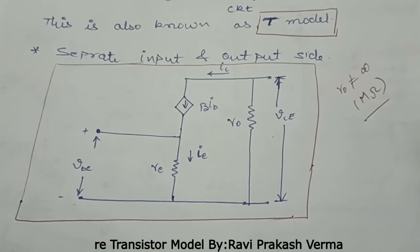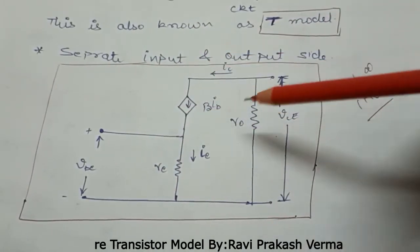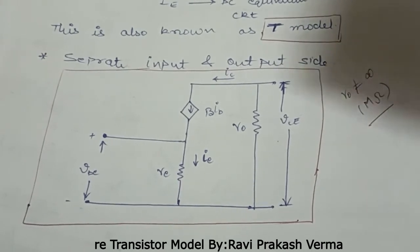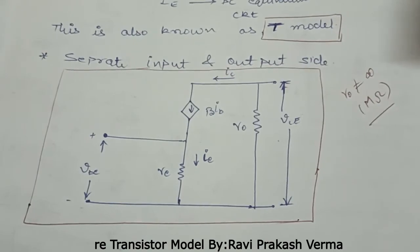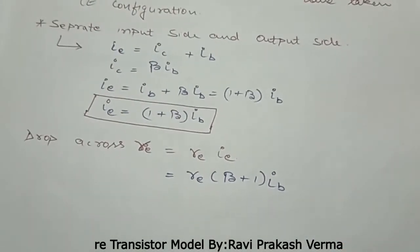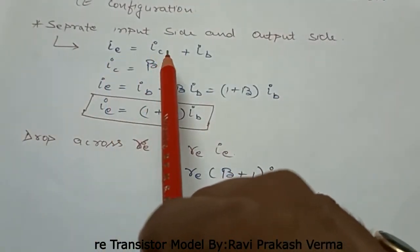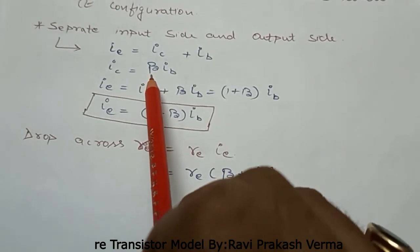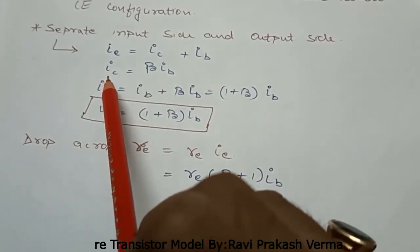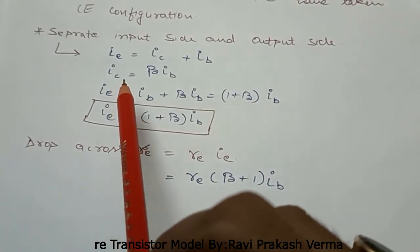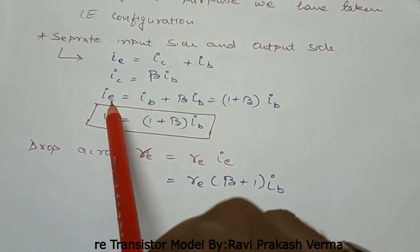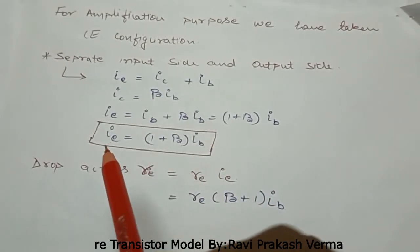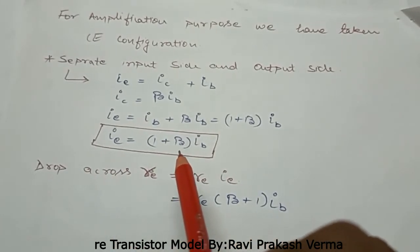Now we separate the input and output sections of the circuit. The common emitter configuration is preferred for amplification because it gives maximum amplification. We know that the emitter current is the sum of collector current and base current, and the relationship between output and input current is defined by beta. Substituting IC = beta·IB into the first equation gives IE = IB + beta·IB, and taking IB common yields IE = (1 + beta)·IB.